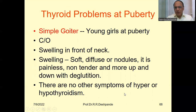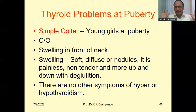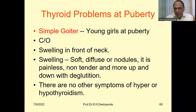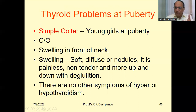There are no other symptoms of hyper or hypothyroidism. This is very important for differential diagnosis — you can say this particular thyroid problem at puberty is a simple goiter because of a deficiency. There will not be any other symptoms of typical hyperthyroidism or typical hypothyroidism such as myxedema. Only swelling — soft, diffuse, painless, with no tenderness and up-and-down movement with deglutition. These are the only symptoms.